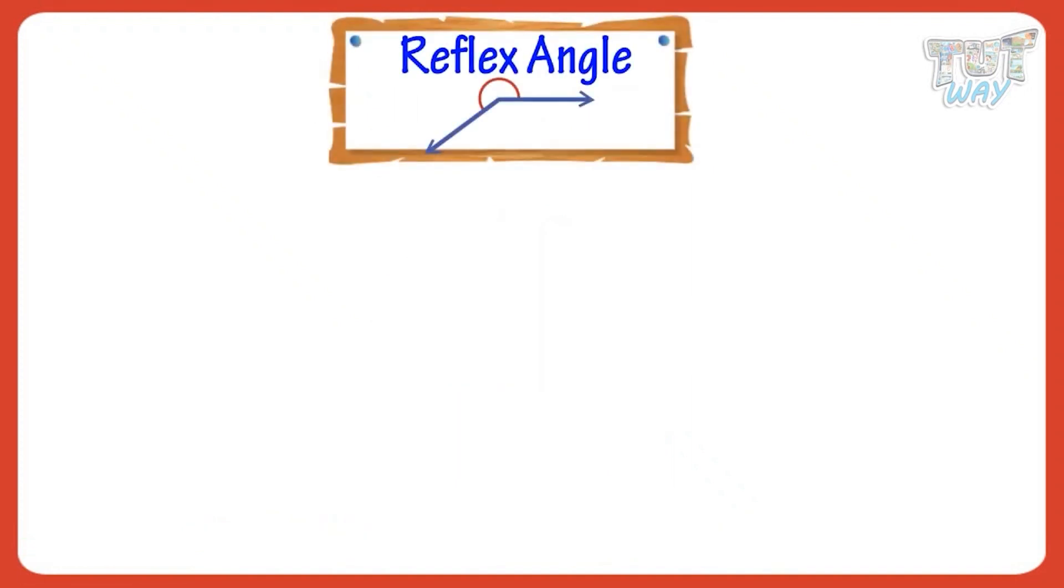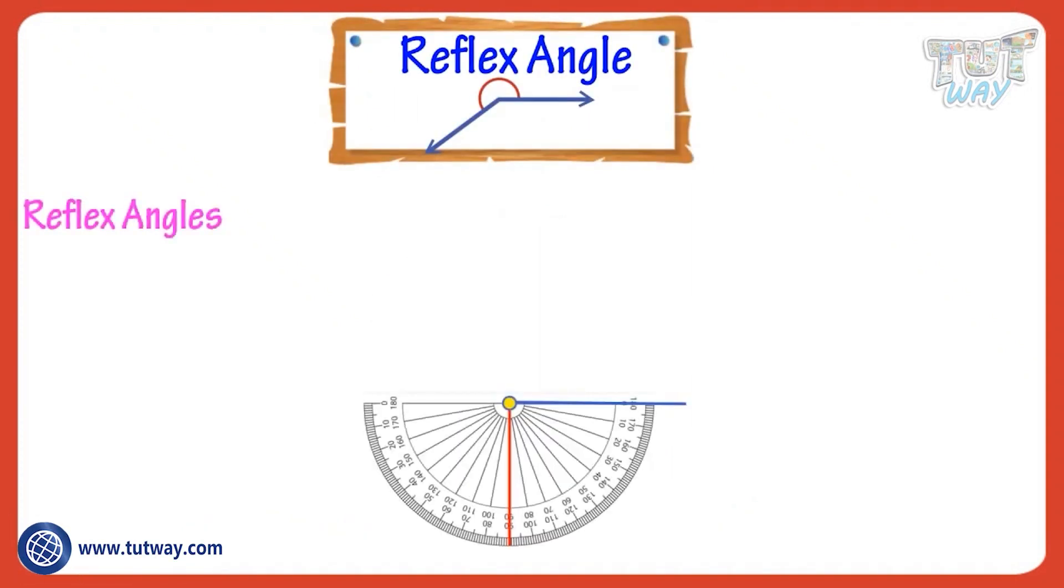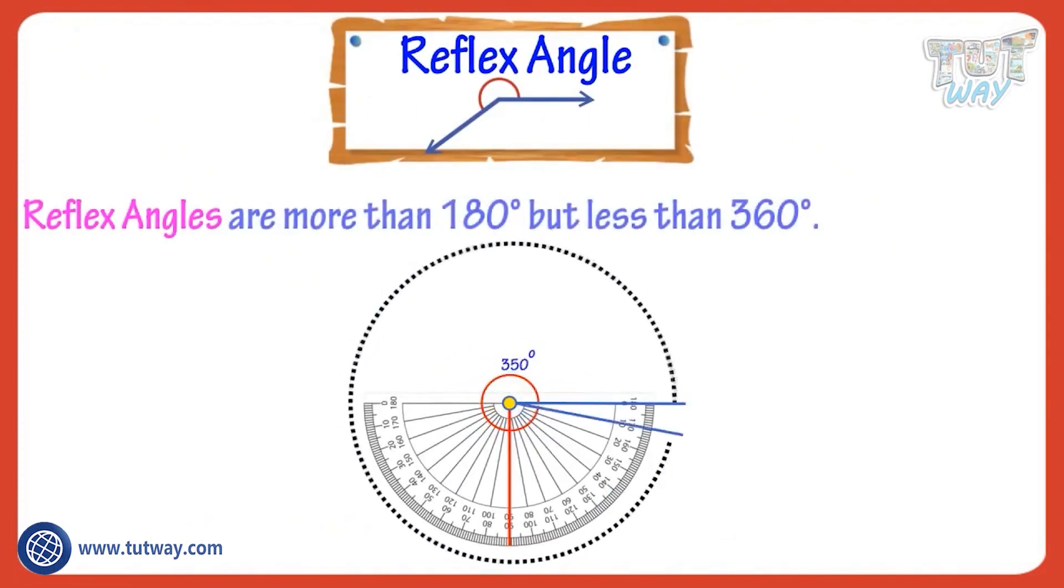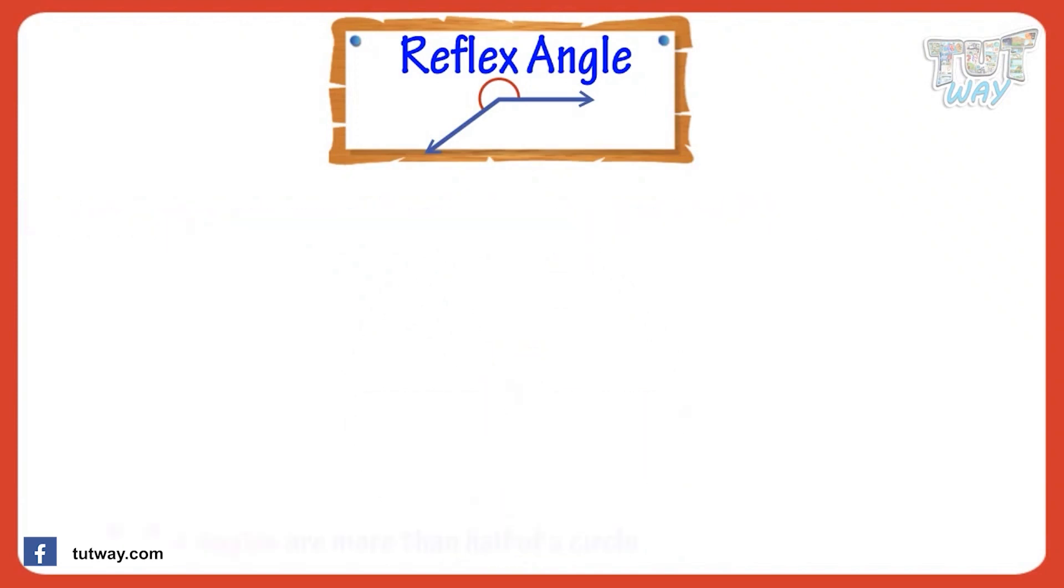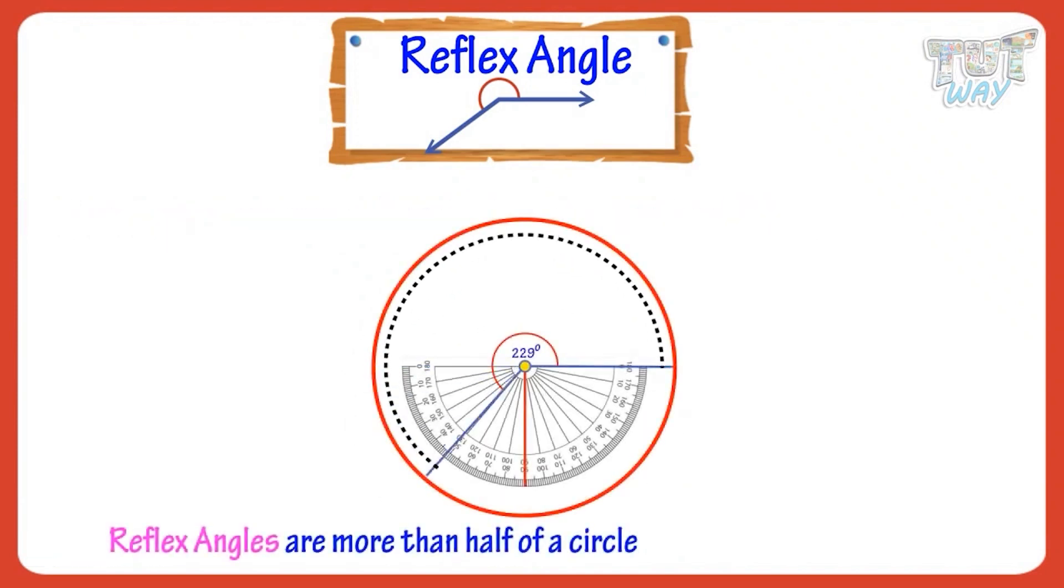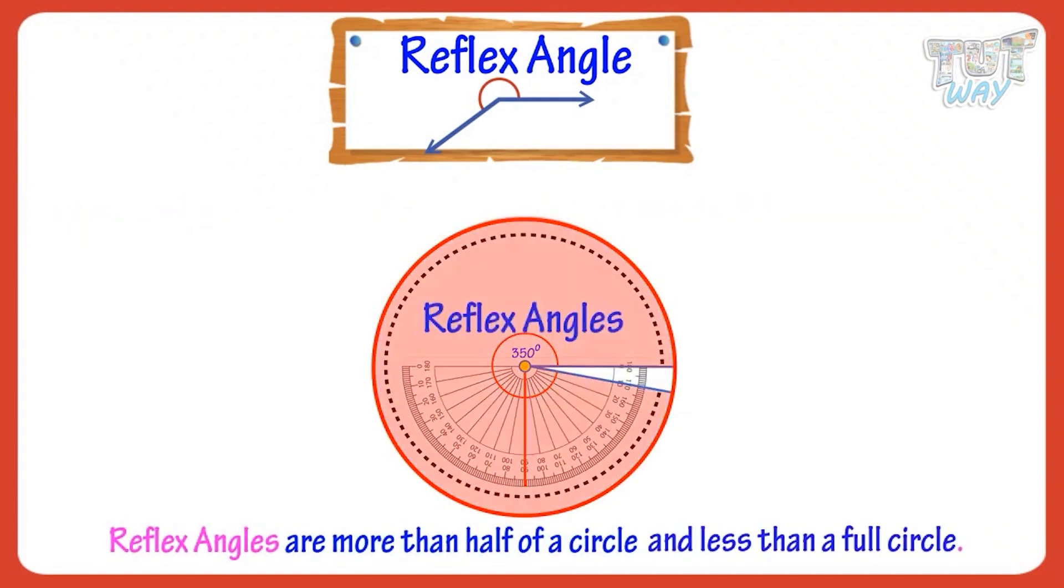Now let's see what are reflex angles. Reflex angles are more than 180 degrees but less than 360 degrees. So reflex angles are more than half of a circle and less than a full circle.